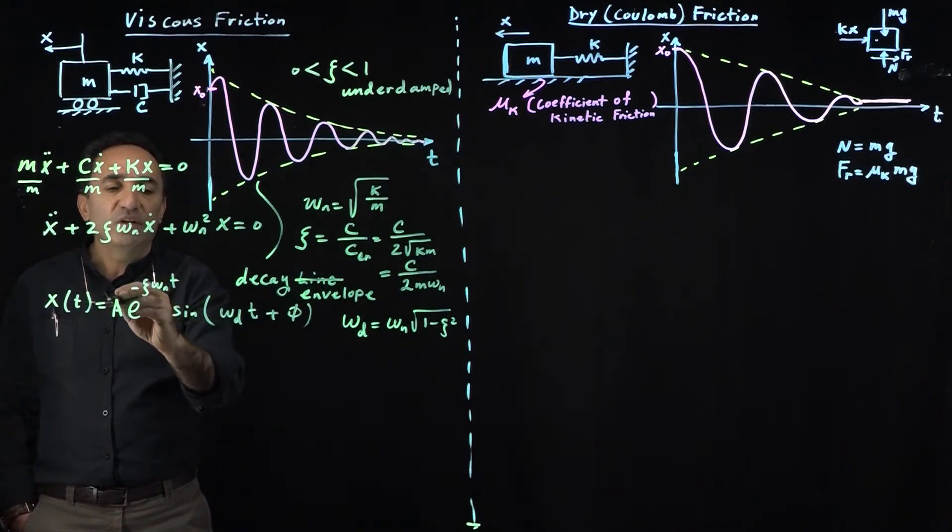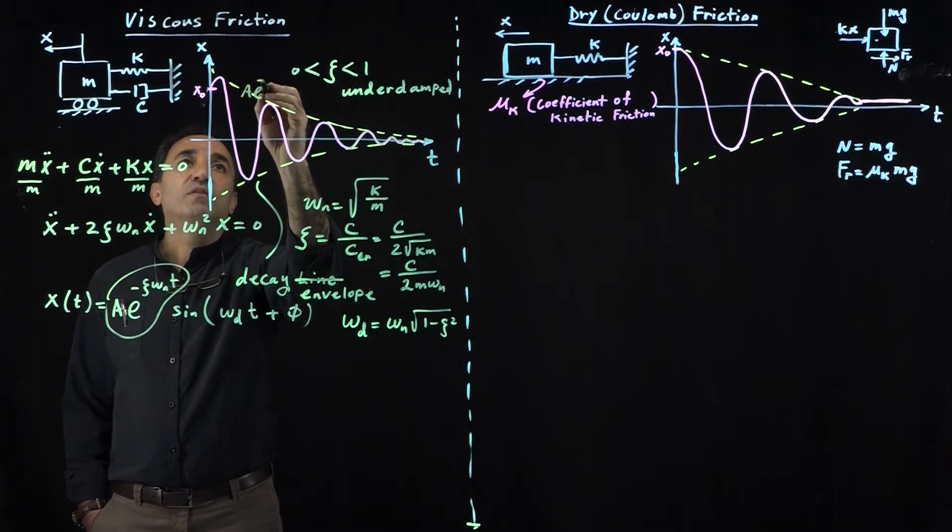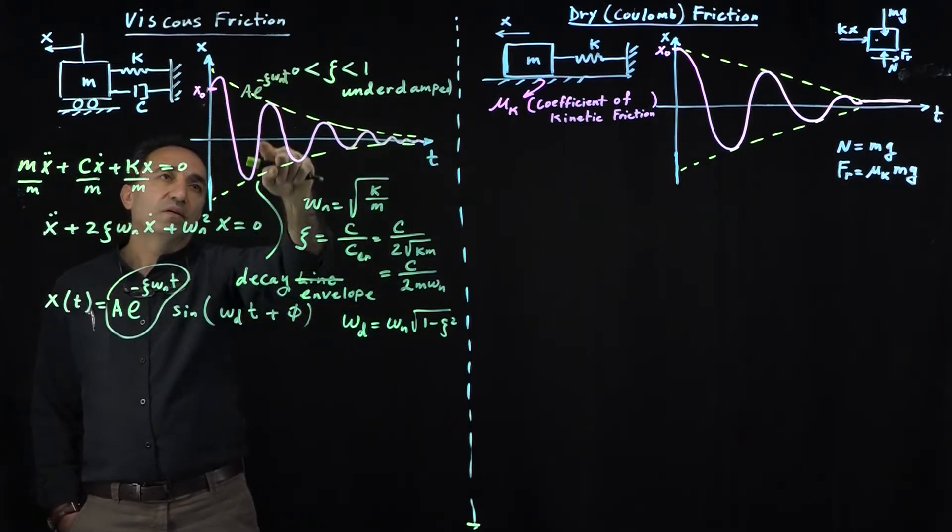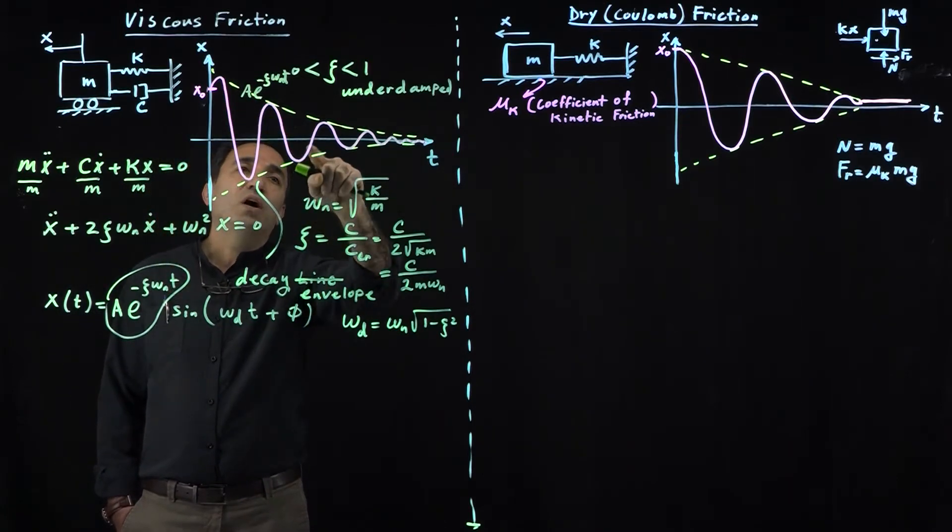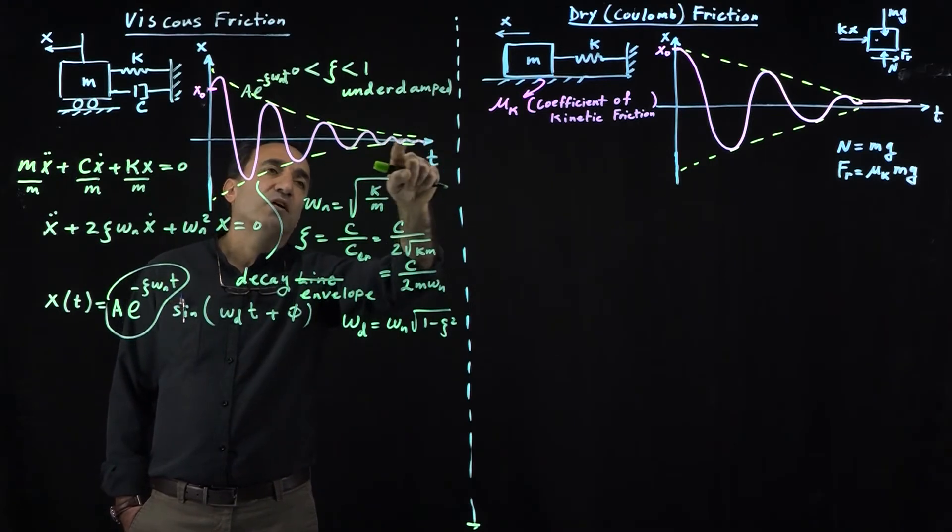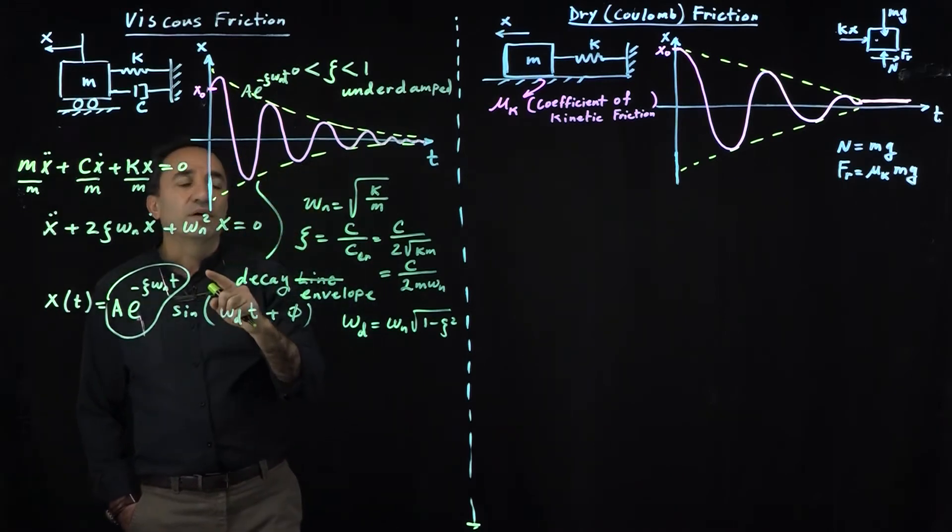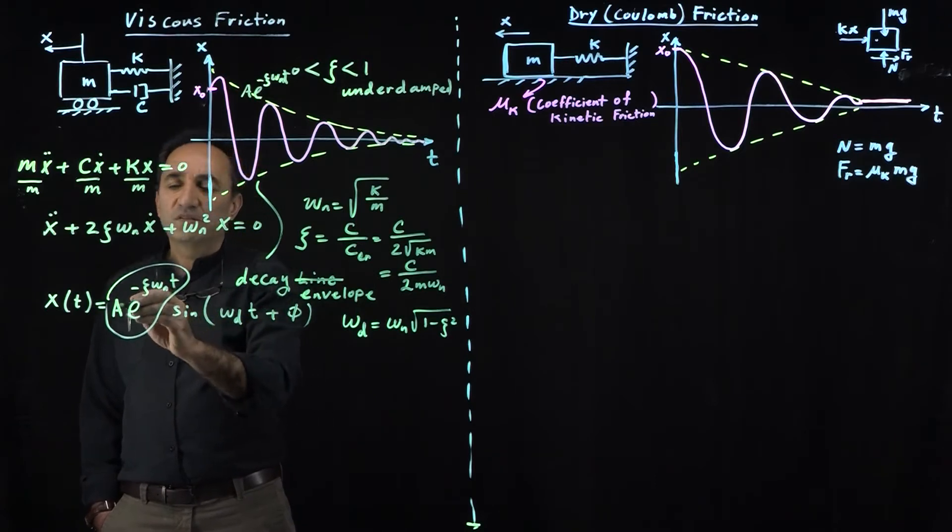The decay envelope is this term here, A e^(-zeta omega_n t). What we have here, this sine wave with this damped frequency, is dying or its amplitude getting smaller and smaller, and it settles around some value. It doesn't have to be necessarily zero, depending on how this system is disturbed. These constants A and phi are determined by the initial conditions.